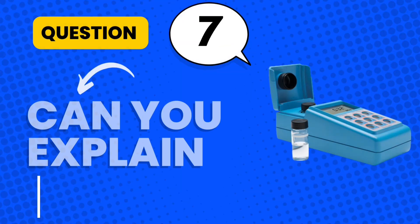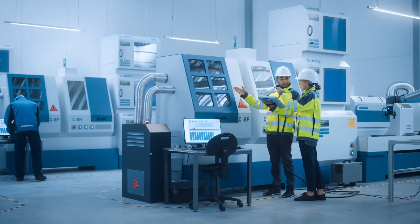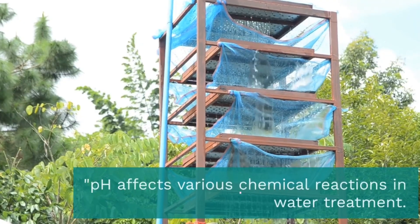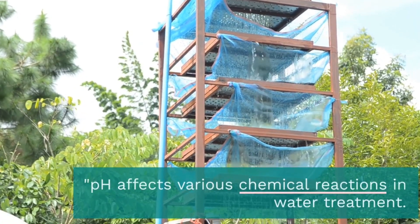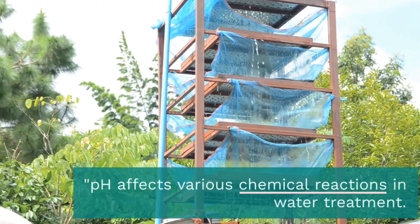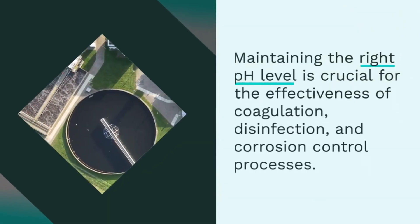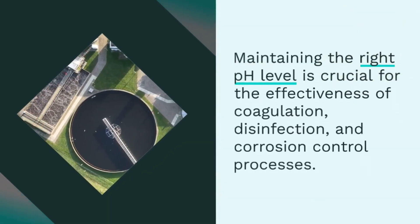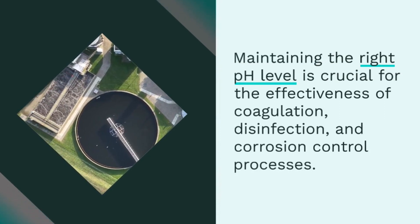Question 7: Can you explain the importance of pH in water treatment? pH affects various chemical reactions in water treatment. Maintaining the right pH level is crucial for the effectiveness of coagulation, disinfection, and corrosion control processes.